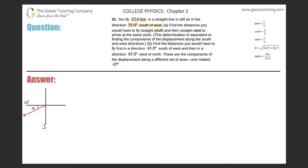So 35 degrees would be the angle in here. They want us to find the distances you would have to fly straight south — let's call that negative y because we moved in the negative y direction — and then travel west from that point, let's call that negative x. So this is what we want to find.